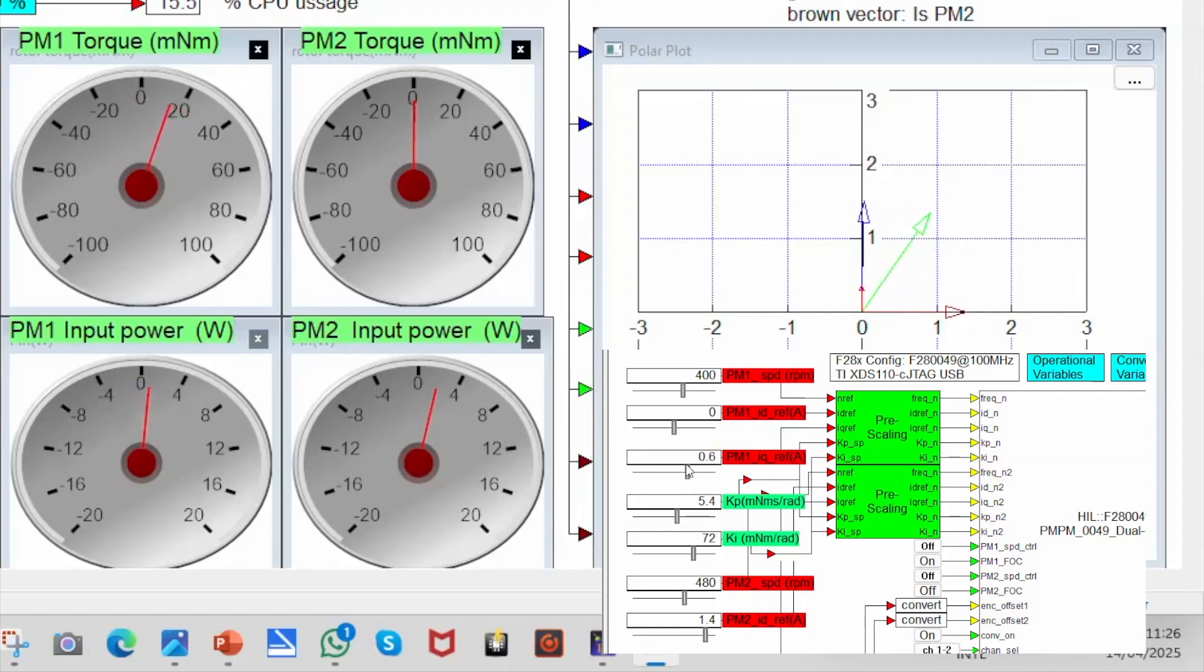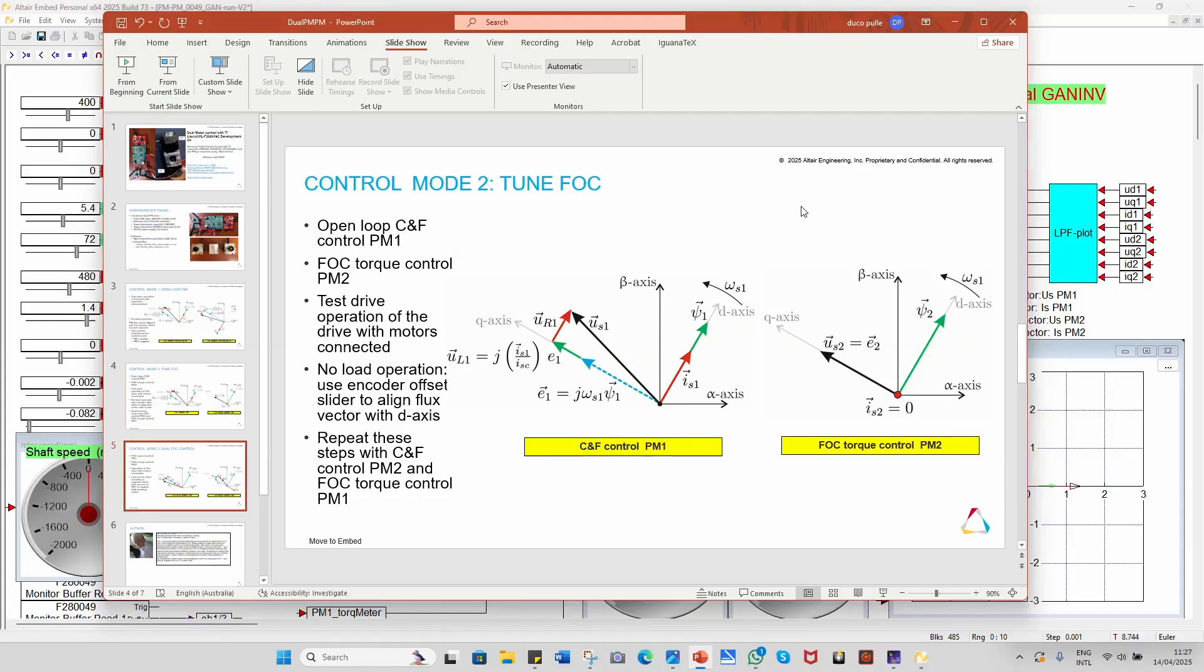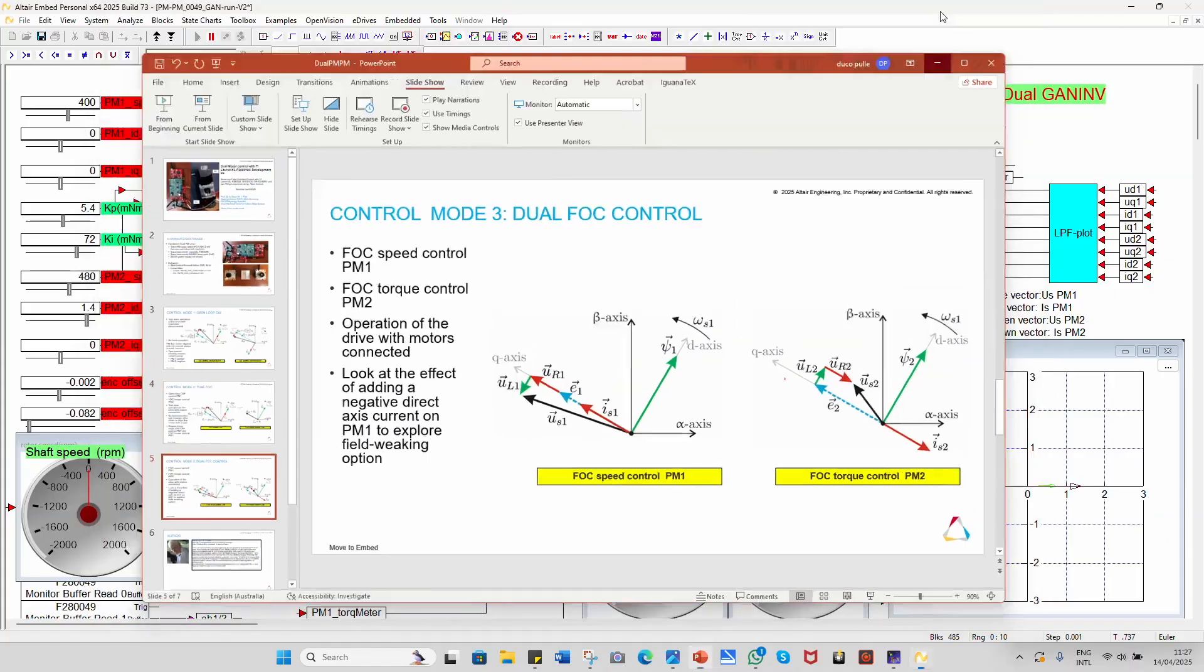All right, the final step is the final mode, which I'll be able to show you there. I'll put both currents to 0, and both machines will be at FOC control. We will have speed control, and we will have torque control PM2, that means we can apply a positive or negative IQ in this case, and in that case, we will see the effect of that. So, we'll look at that, and show you this operation.